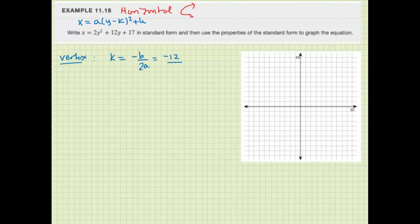So we have negative 12, 2 times 2. Negative 12 over 4 is negative 3. And we're going to plug that in and find the h value.